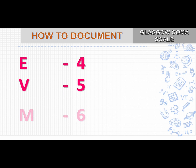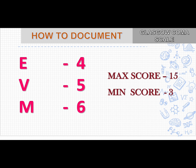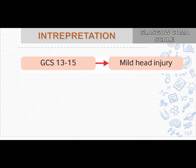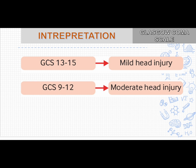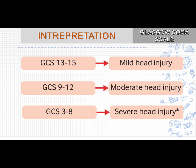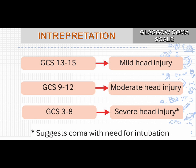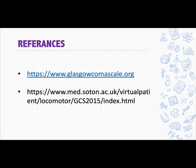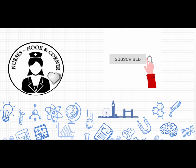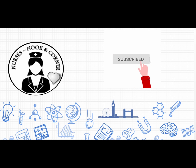How do we document the GCS? It is documented as E4, V5, and M6, giving a maximum total score of 15 and a minimum of 3. Interpretation: 13 to 15 is mild head injury, 9 to 12 is moderate head injury, and 3 to 8 is severe head injury. If the score is 3 to 8, you need to initiate coma management with need for intubation.